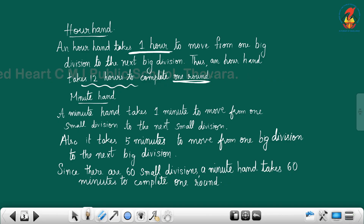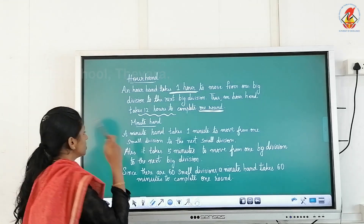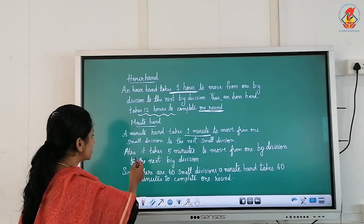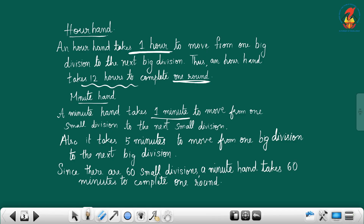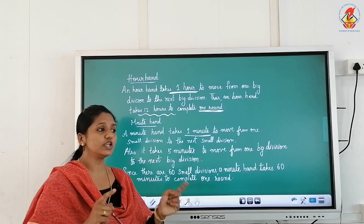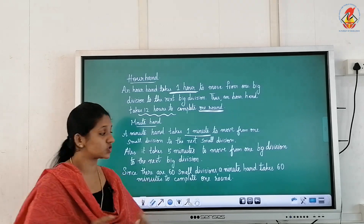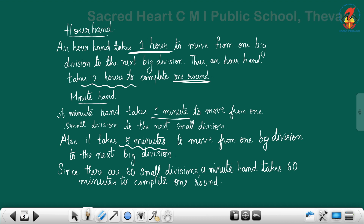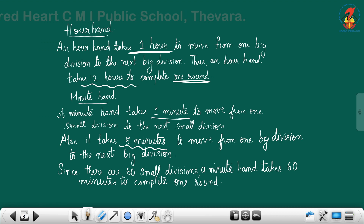Next is the minute hand. The longer hand is the minute hand. A minute hand takes one minute to move from one small division to the next small division, and five minutes to move from one big division to the next big division. Since there are sixty small divisions, the minute hand takes sixty minutes to complete one round.